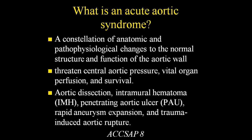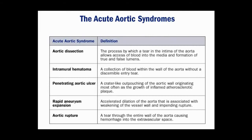You can also have trauma and rupture. A dissection is actually a tear between the intima and the media of the aorta — it's not an aneurysm. Sometimes people say 'dissecting aneurysm,' and it can happen in the setting of an aneurysm, but it's actually tearing between tissue planes. An intramural hematoma is when you can't necessarily see the tear on TEE or CT, but you see a large collection of blood in the wall.